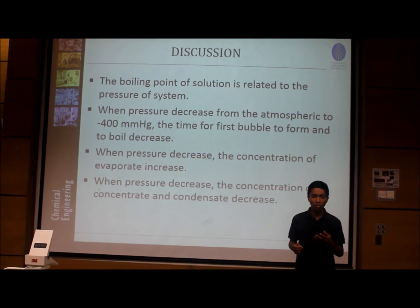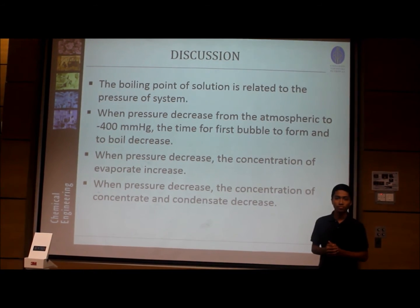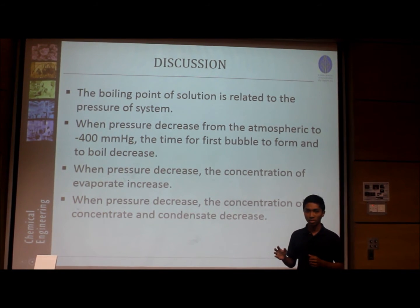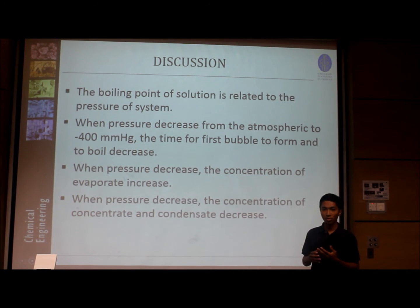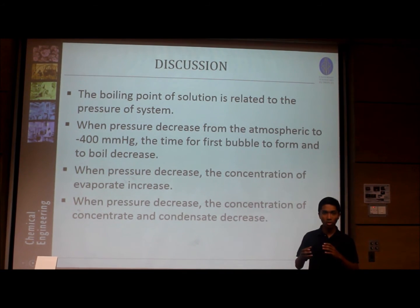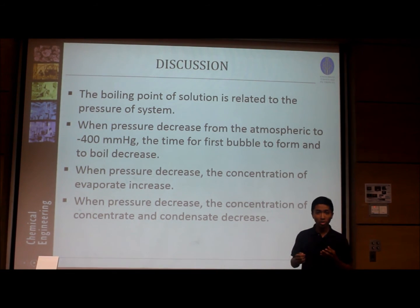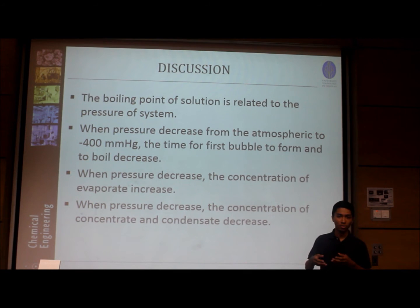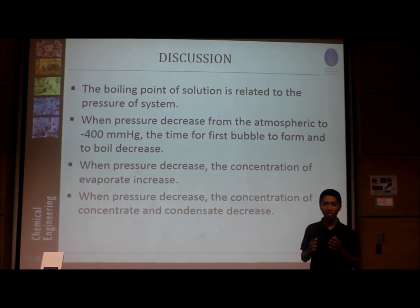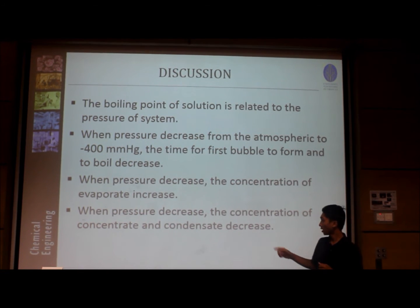When pressure decreases, the concentration of the evaporate increases because the evaporation rate increases. This causes the temperature in the system to increase, while the vapor pressure on the surface of the solution decreases. As pressure decreases, water molecules tend to move out, causing the concentration of the evaporate to increase. Consequently, the concentration of the concentrate and the condensate decreases.